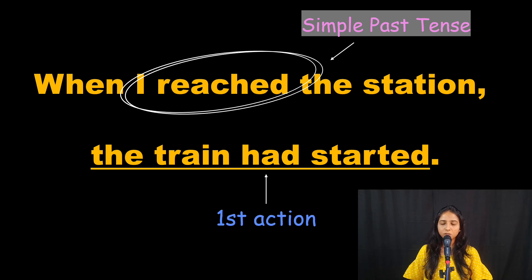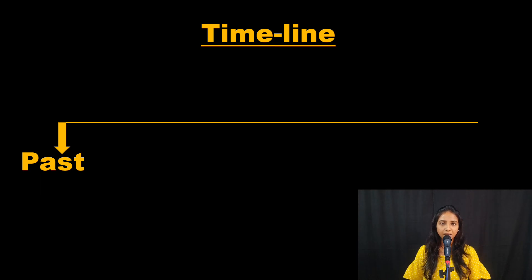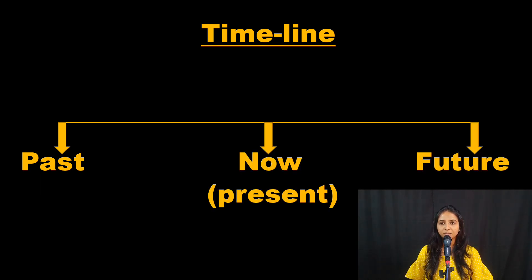Let's look at the past perfect tense on the timeline. This is our timeline — this is the past, this is the present, and this is the future. In the past perfect tense, it involves two actions in the past.